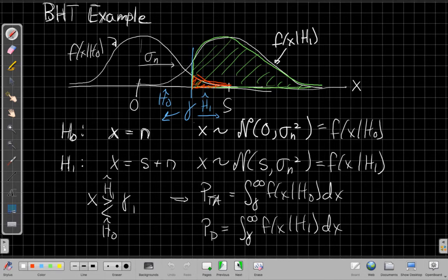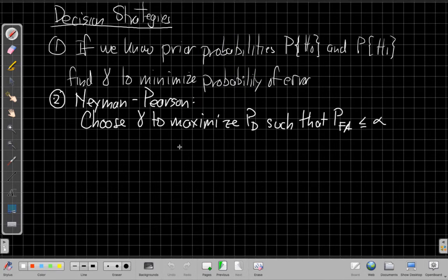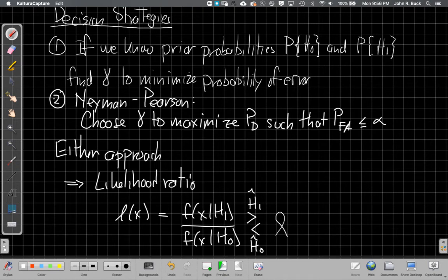One of the really beautiful results of binary hypothesis test and detection theory is that both of these approaches, either approach gets us to the same place. That is, both approaches lead, we can set this up to take a derivative of gamma and minimize the probability of error in terms of gamma. Neyman-Pearson, we can use our favorite Frenchman, Lagrange, to find a constrained maximization on PD subject to a constraint on PFA. And remarkably, both of us, both will bring us back to something called the likelihood ratio.